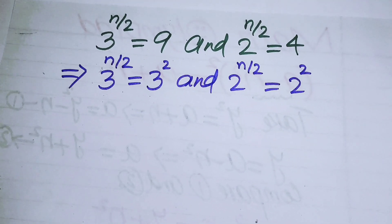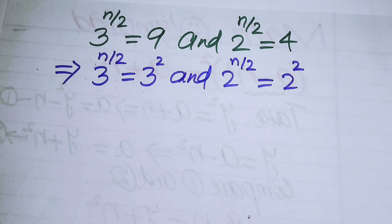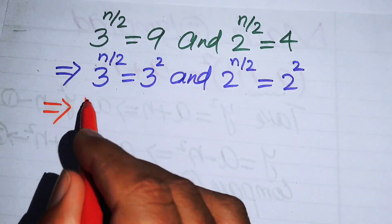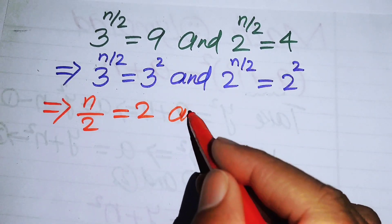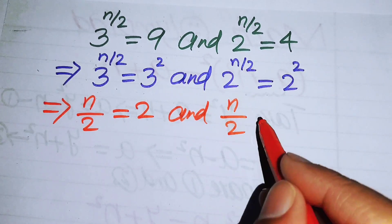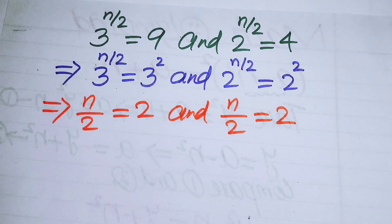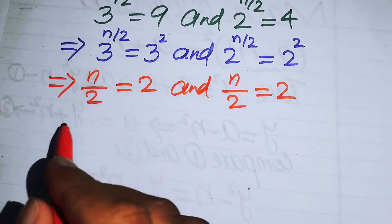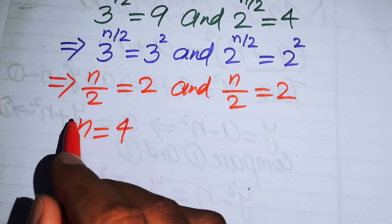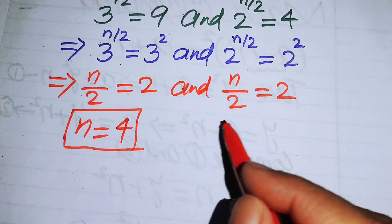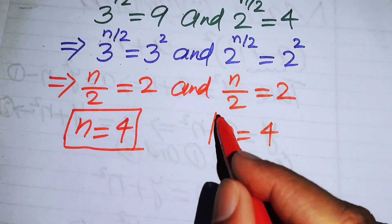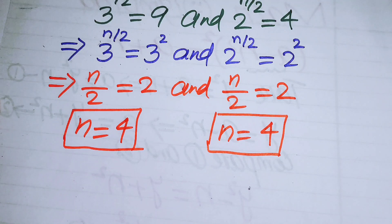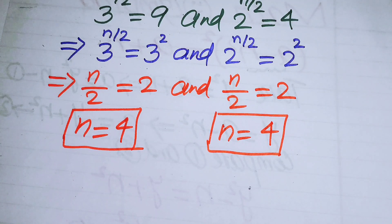Since the bases on both sides are the same, we equate the exponents. From both expressions we get n over 2 equals 2, so n equals 4 in both cases. Therefore n equals 4 is the unique solution to this problem. Thank you for watching — please subscribe for more exciting videos.